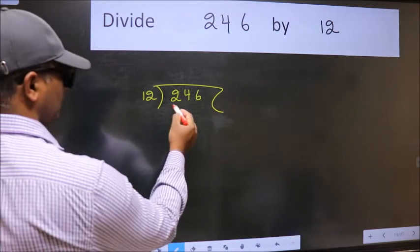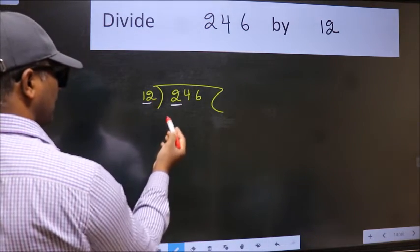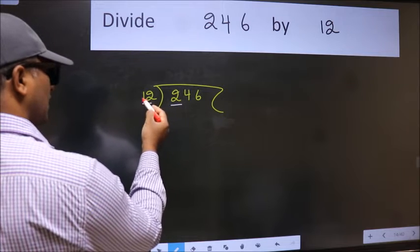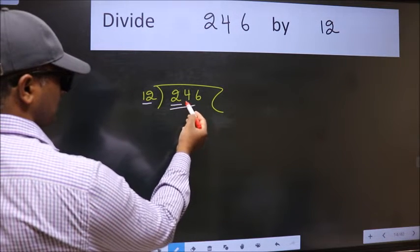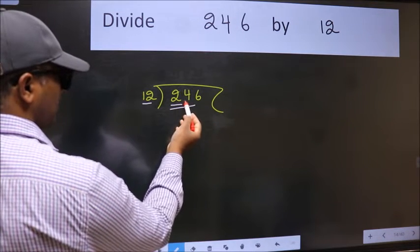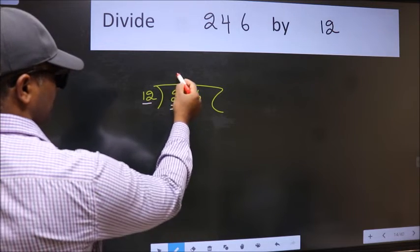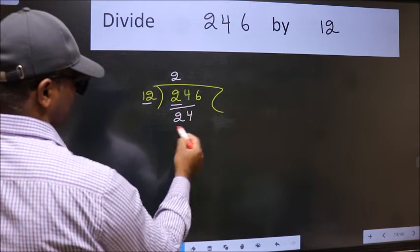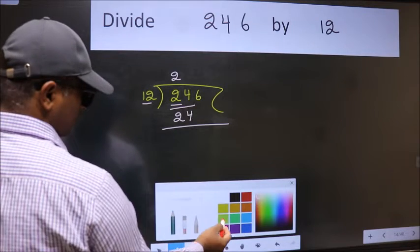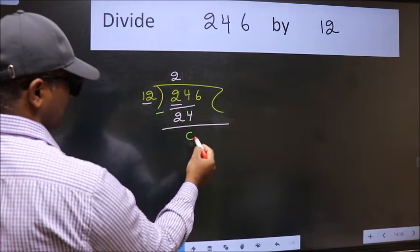Here we have 2, and here 12. 2 is smaller than 12, so take 2 numbers: 24. When do we get 24 in the 12 table? 12 times 2 is 24. Now we should subtract. We get 0.